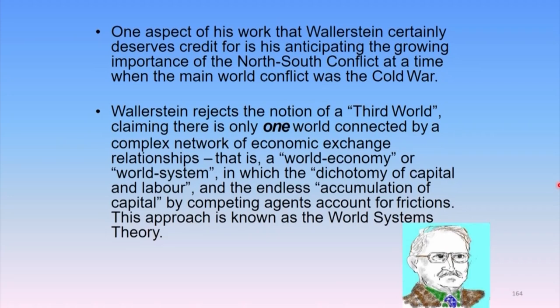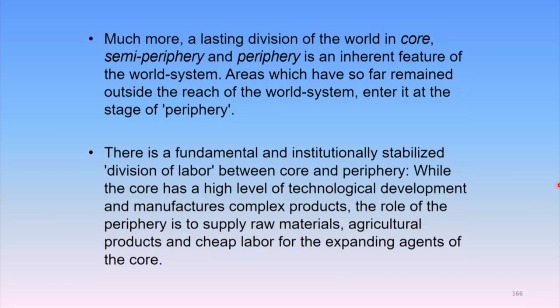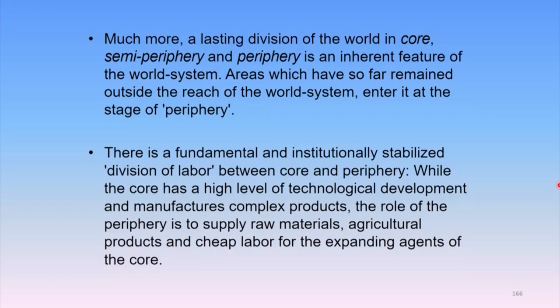This approach is known as the world systems theory. Wallerstein tried to foreground the problematic of core-periphery by bringing about a zone called semi-periphery. There is a fundamental and institutionally stabilized division of labor between core and periphery. While the core has a high level of technological development and manufactures complex products, the role of the periphery is to supply raw materials, agricultural products, and cheap labor force for the expanding agents of the core.